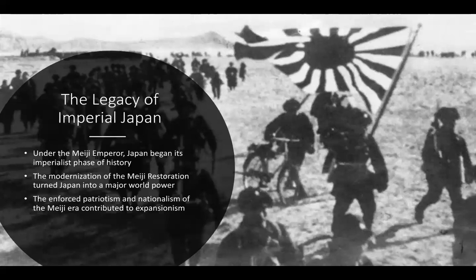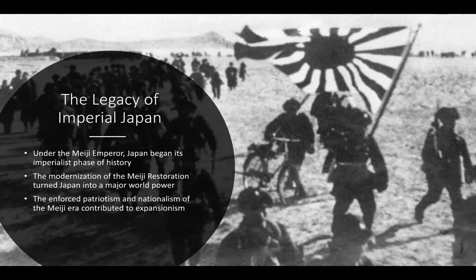Even though the Meiji era ended, it continued to exert a lot of power over the way Japan would develop into the 20th and even the 21st century to some extent. Japan began its imperial phase under the Meiji emperor — previously it had just been a little feudal kingdom, but now it was a serious, modernized imperial world power. Because of this legacy of enforced patriotism and nationalism, the Meiji era contributed to a policy of expansionism and Japanese nationalism, which would be intensely focused in World War II.